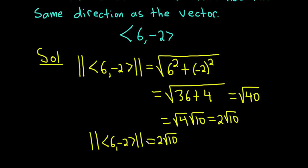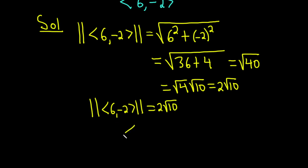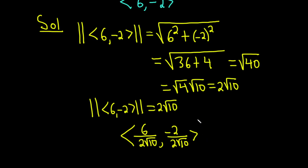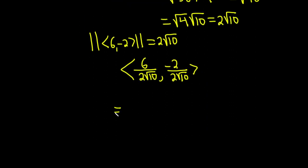This is the length of the vector, also called the norm. Now we take our vector and divide it by this magnitude. So our unit vector is going to be 6 over 2√10, comma, negative 2 over 2√10. You just divide each component by 2√10. Simplifying: 6 over 2 is 3, so we get 3 over √10, and then negative 1 over √10.